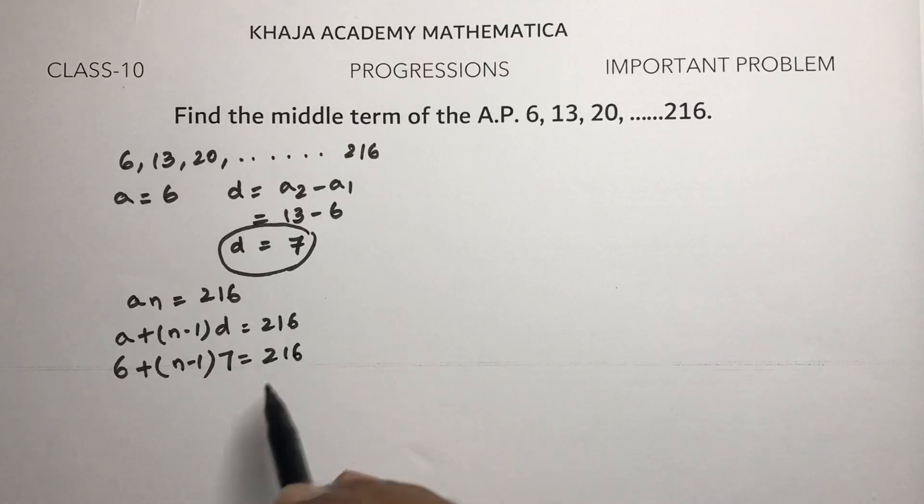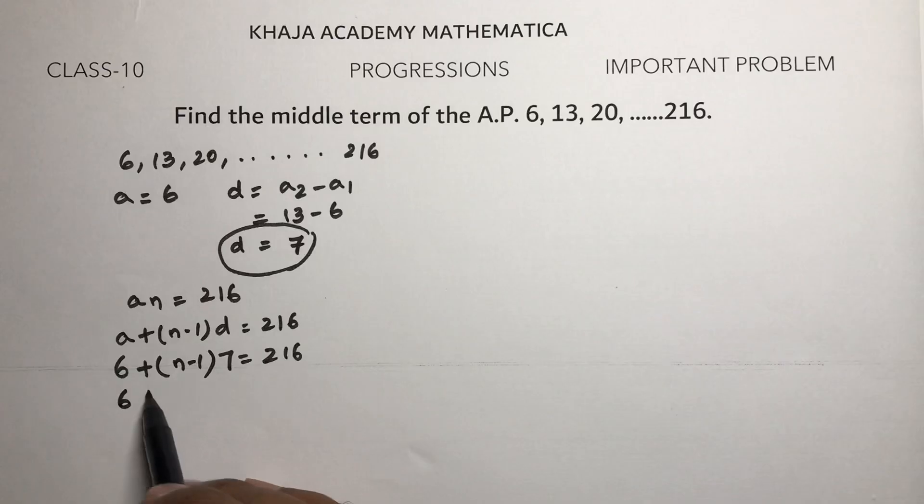So 6 + 7n - 7 = 216. Simplifying, 7n - 1 = 216.